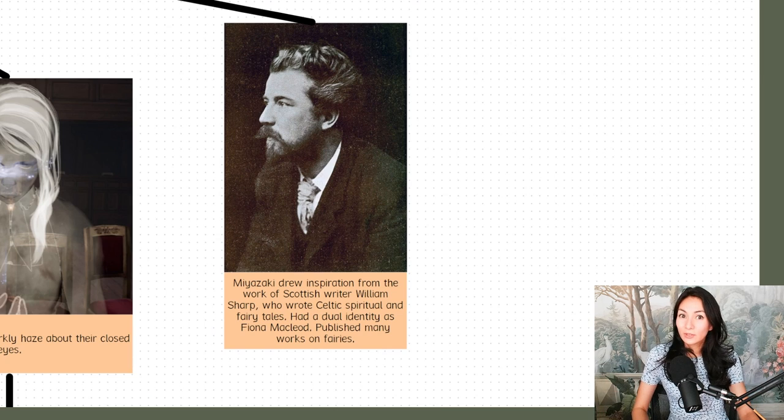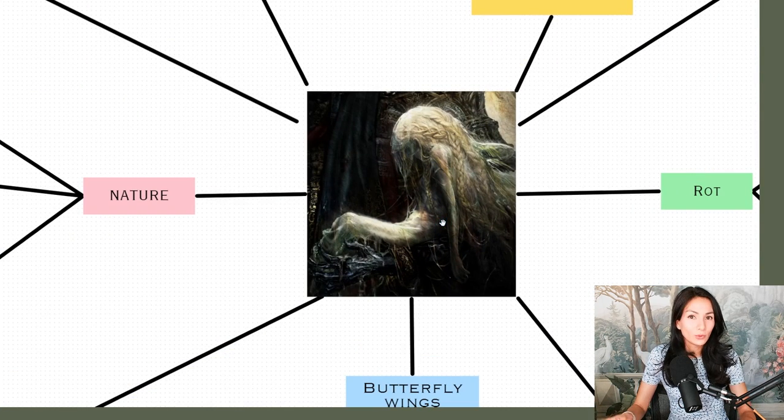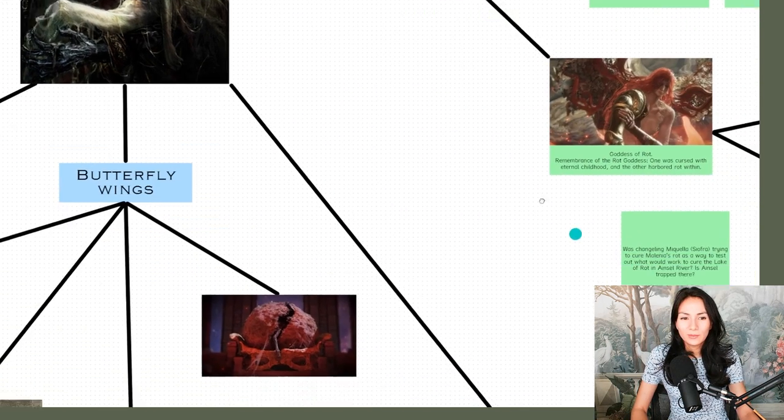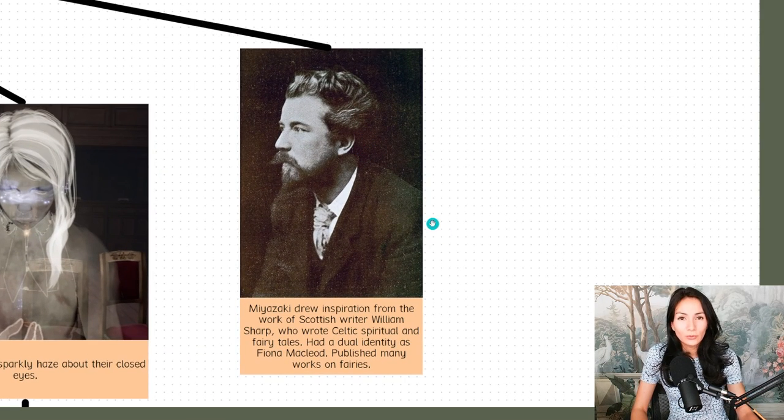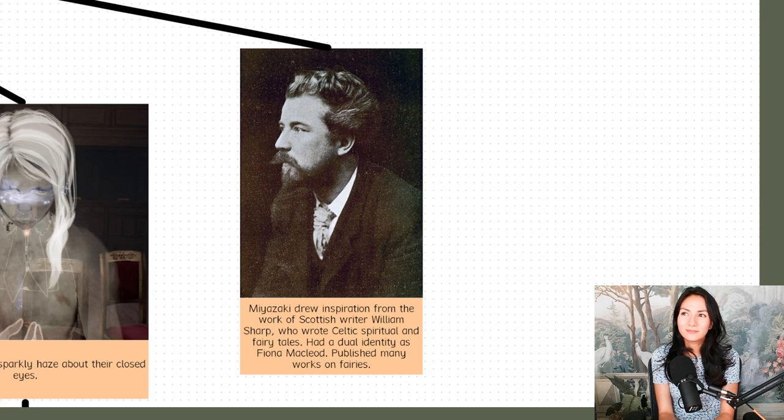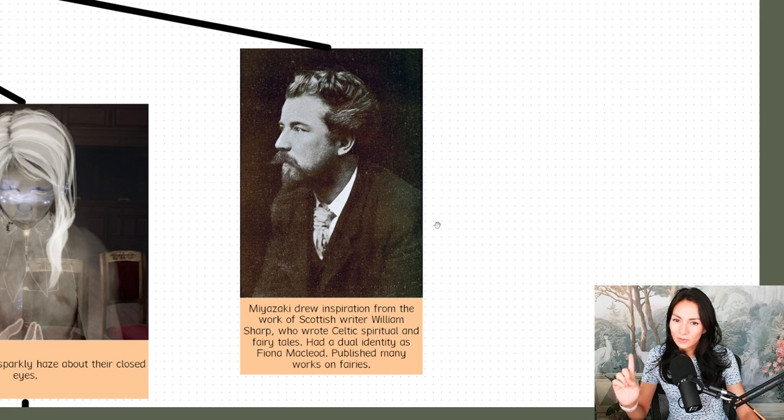He was a poet who wrote a lot of Celtic spiritualist and fairy poetry and fairy stories. William Sharp had a dual identity in which he also published works under the name Fiona McLeod. I thought that was really interesting because Miquella also has a dual identity as Saint Trina and it's a female dual identity.